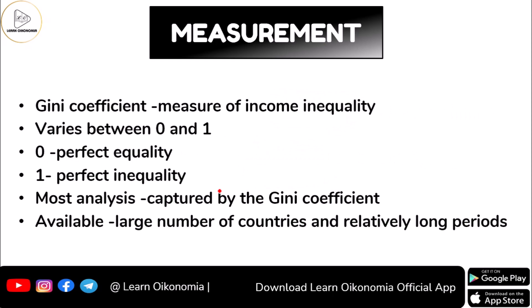Let's consider the measurement of inequality. The inequality concept is measured using a very important tool called the Gini coefficient. It is considered a numerical measure of inequality, developed by statistician Corrado Gini, and it gives a value between 0 and 1. The value ranges between 0 and 1, where 0 shows perfect equality and 1 shows perfect inequality.